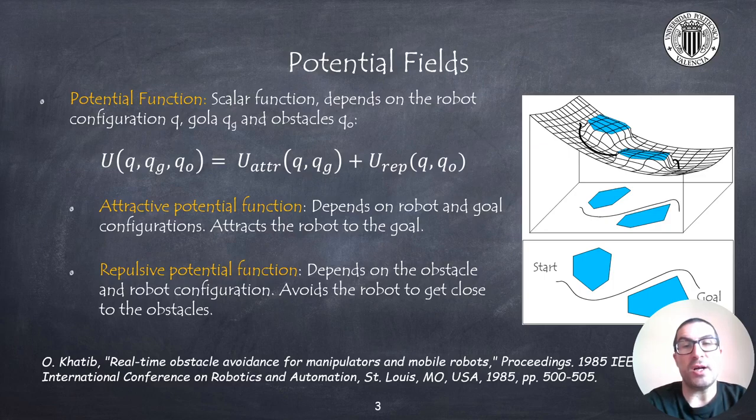The functions are designed in such a way that the robot will be attracted to the goal and will move away from obstacles, as if it were a ball under a gravitational field that seeks minimum energy configuration.